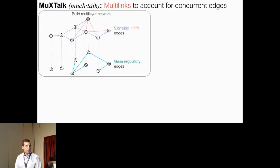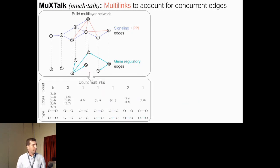We have this analytical framework, and it consists of the following steps. We first build a multilayer network that consists of a signaling layer and a gene regulatory layer.